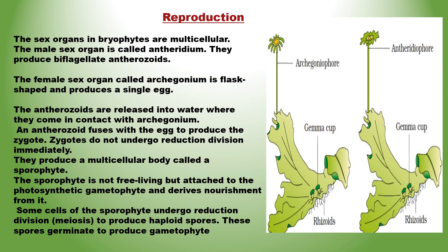Bryophytes show alternation of generations between the gametophytic and sporophytic generation, with the gametophytic being the dominant phase. The plant body is the gametophyte, which is haploid. It produces gametes. The sex organs in bryophytes are multicellular. The gametophyte bears antheridia, the male sex organs, and archegonia, the female sex organs.